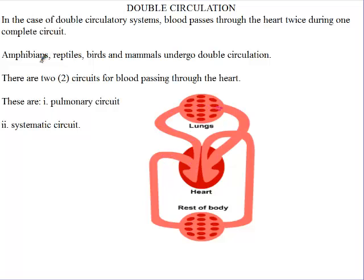Now, amphibians — for example, toads and newts — reptiles, lizards, and snakes, birds, and mammals all undergo double circulation.